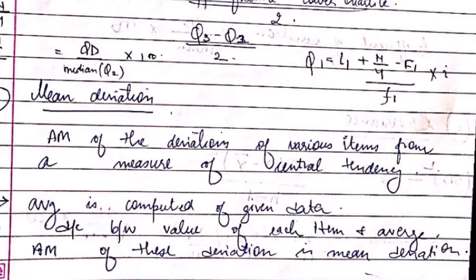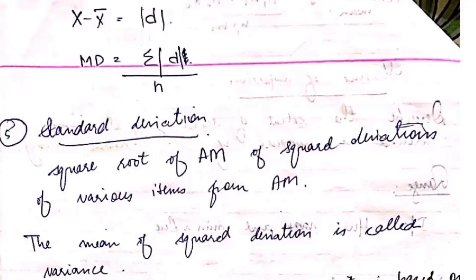Mean deviation is the deviation of various items from the measure of central tendency. The average is computed for the given data, and then the difference between the value of each item and the average is taken. The arithmetic mean of these deviations is the mean deviation.